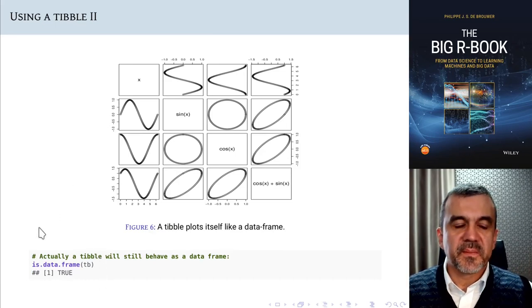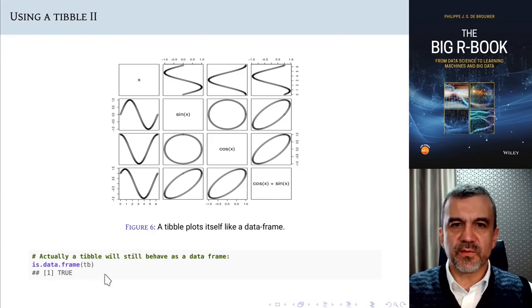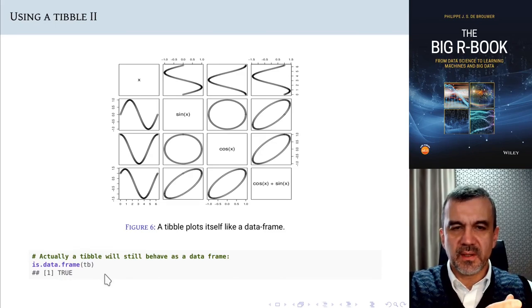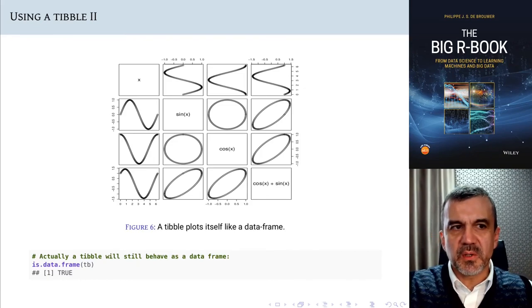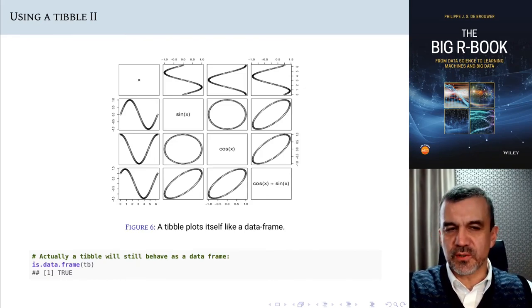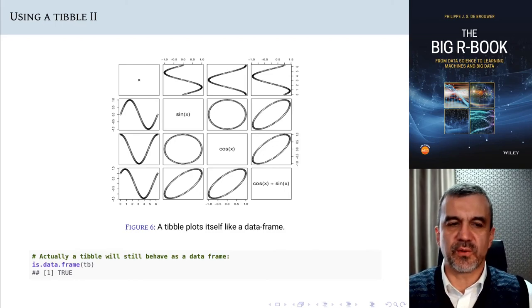And as I said, this works because it is still a data frame under the hood. So a tibble is in the first place a tibble, as long as it works fine and as long as there is a function available to work with a tibble. But if that would go wrong, if there is no function to handle the specific requirement of a tibble, well it will simply default to the function for a data frame. It still is a data frame.